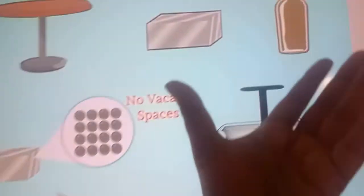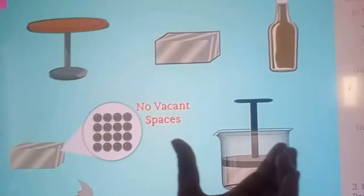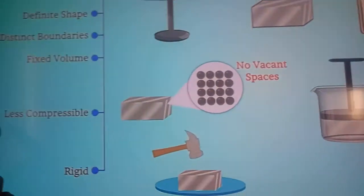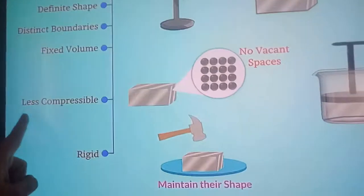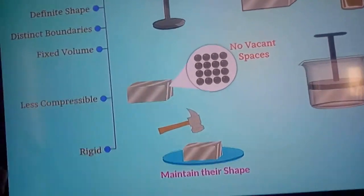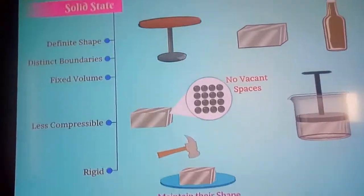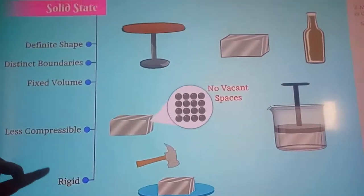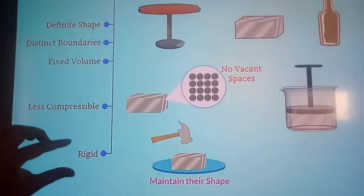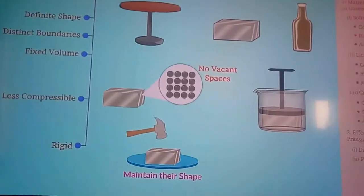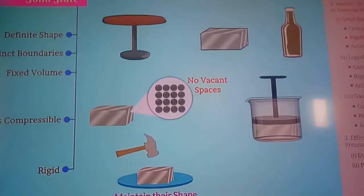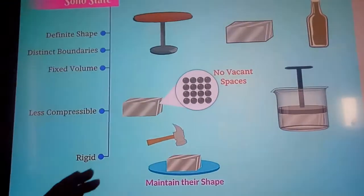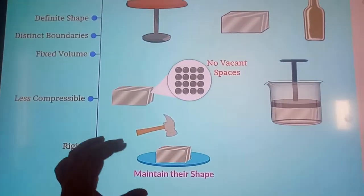Suppose you try to press a glass bottle — will it compress? No. So compressibility is completely absent in solids. The last property of solid is rigidity. Rigidity means the solid can maintain its shape — it will not change unless we exert some force on it.